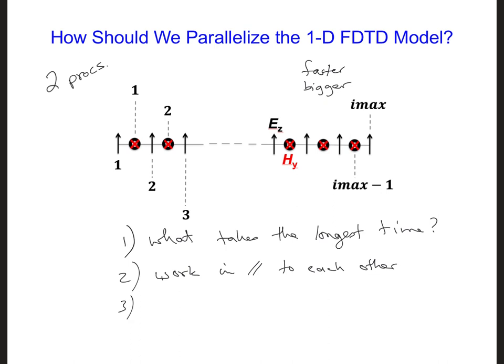And three, how can we give both processors the same amount of work so that they can both finish their work at about the same time? So same amount of work for each processor?